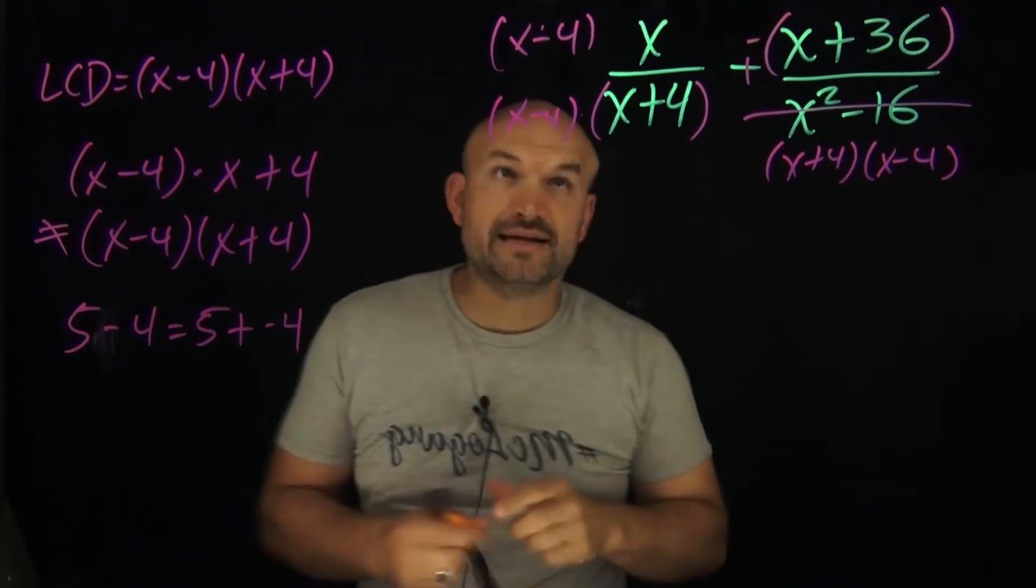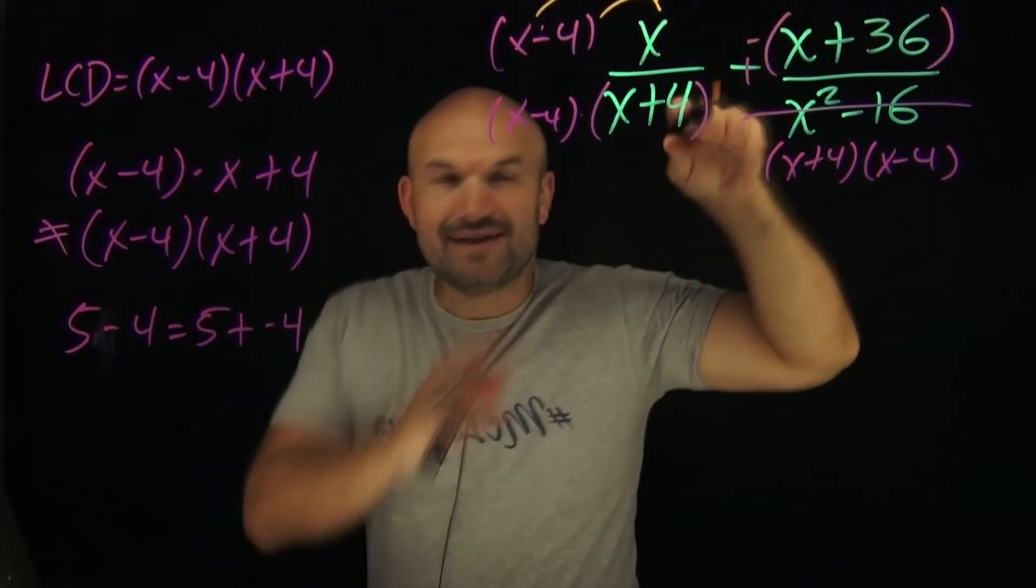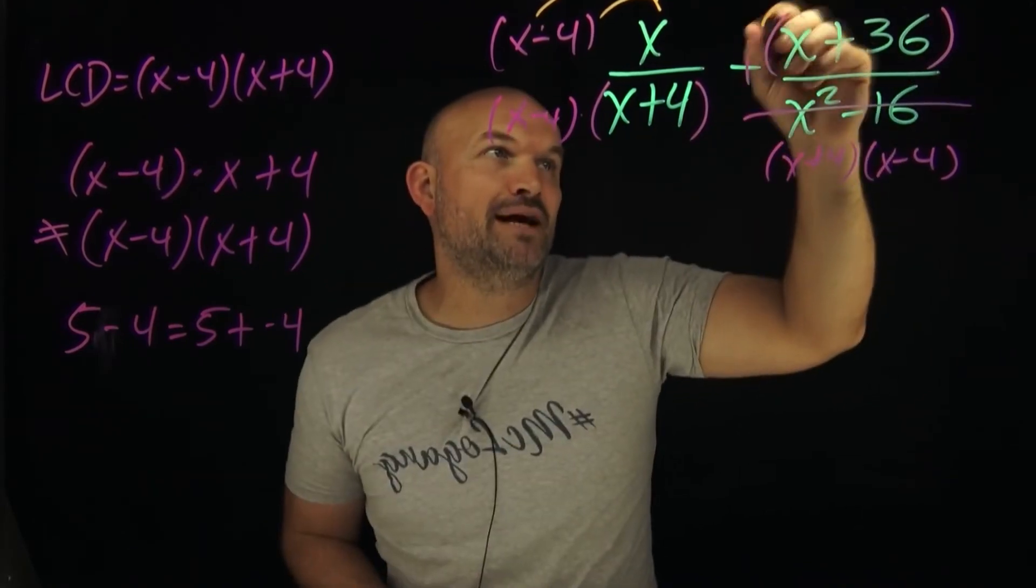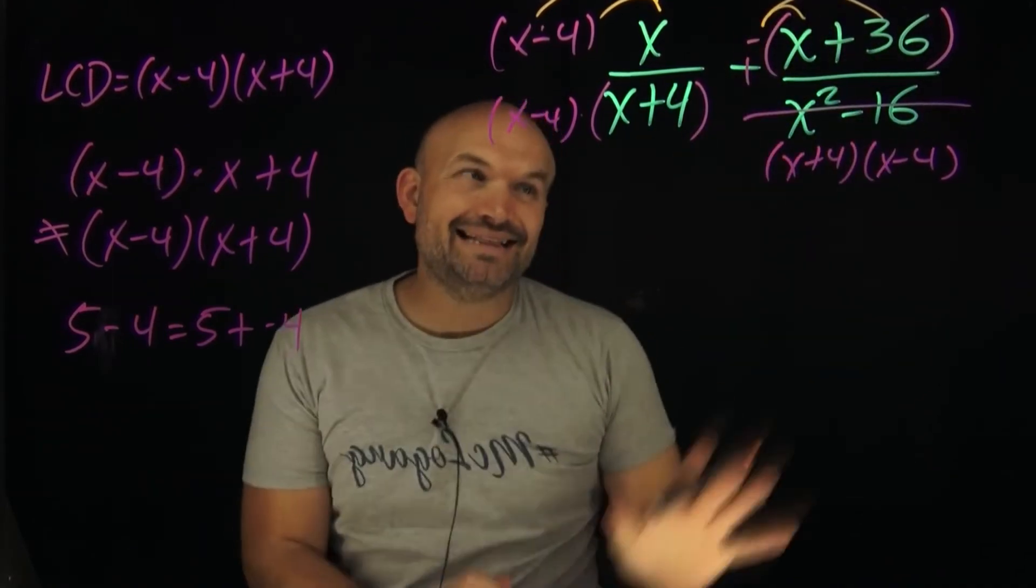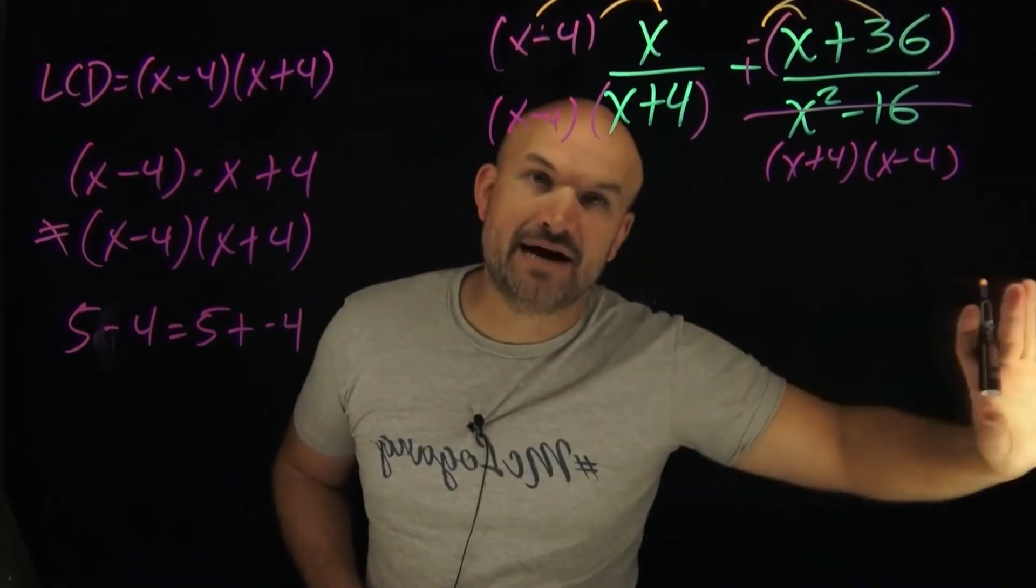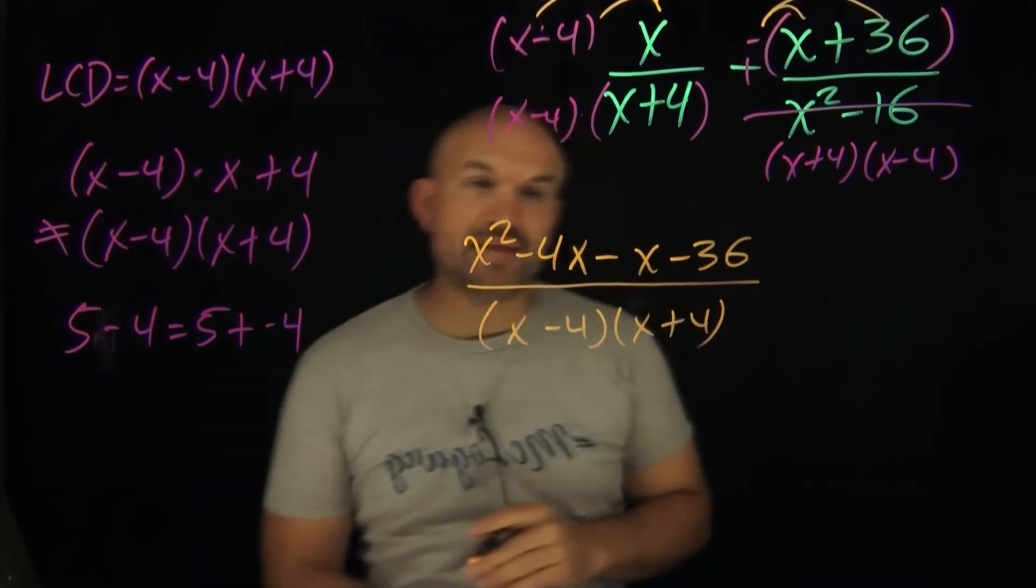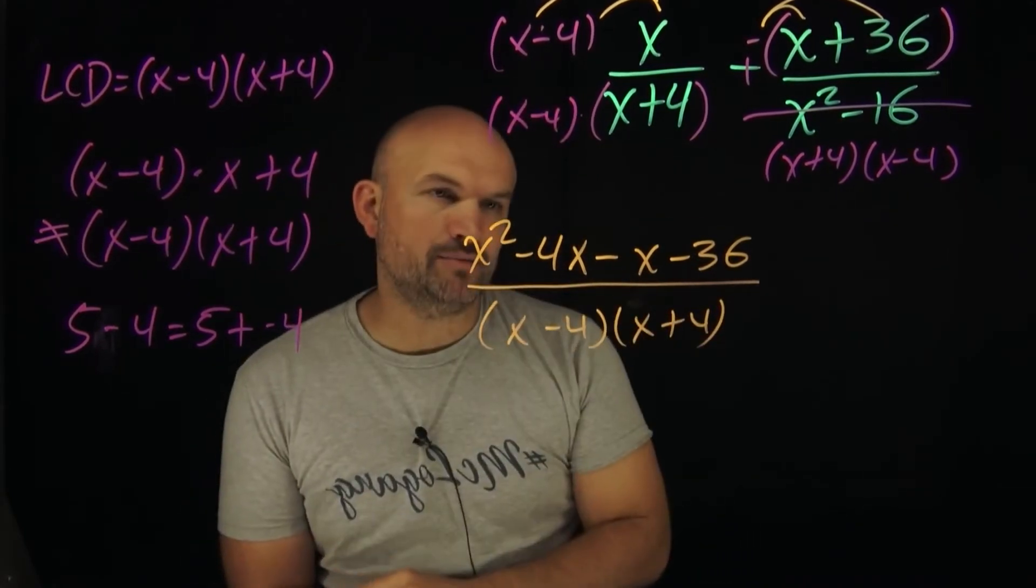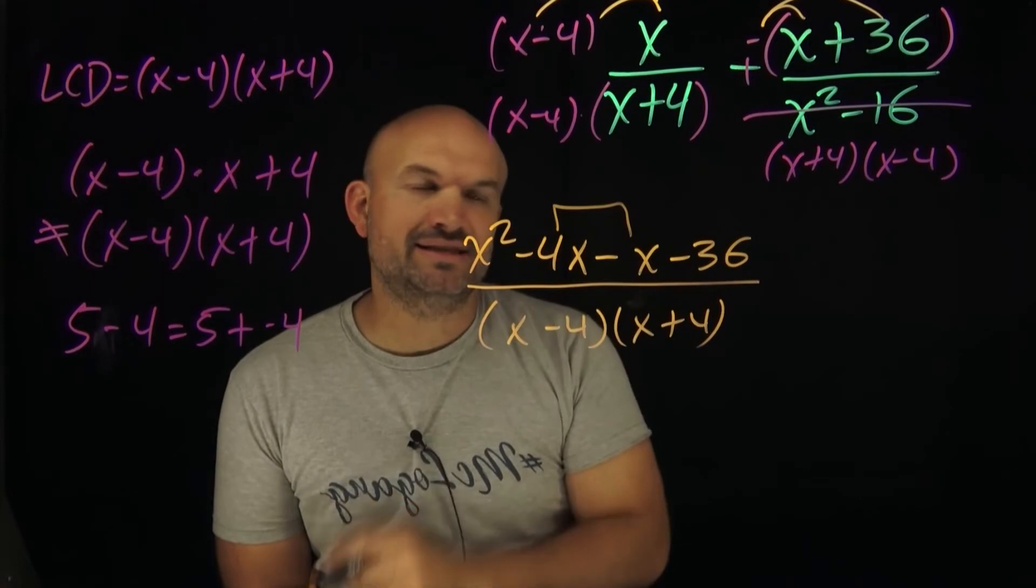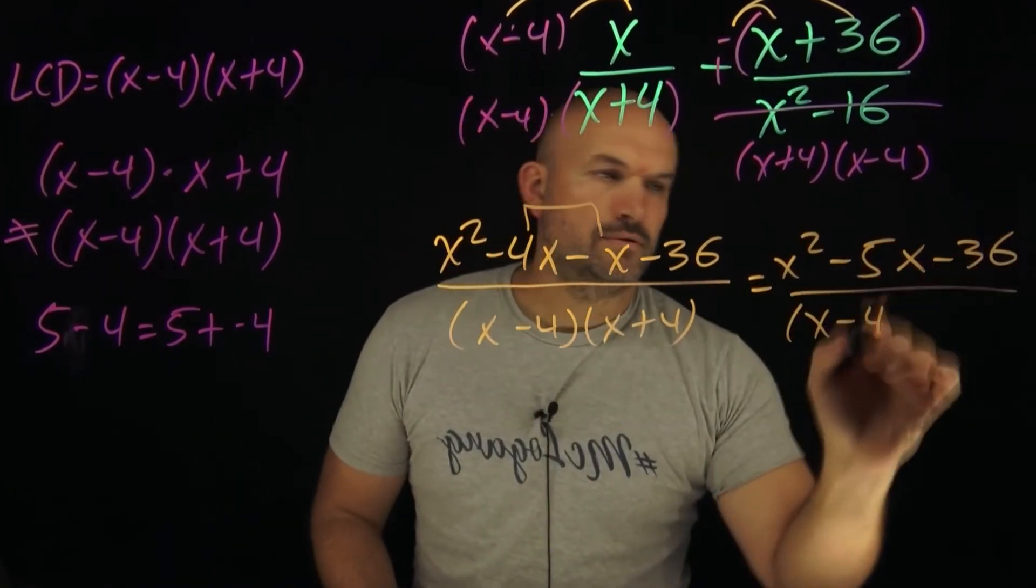All right, so now we have our common denominator. Now the one thing we do want to do is apply distributive property here. And again, notice how I have the negative with the parentheses. I can remember to apply distributive property over here. And then again, the nice thing is now that we have the least common denominator, I can just simplify everything down below. And now that I have everything, it looks like we're going to have a trinomial up top and it looks like I can combine these like terms. That's going to give me a negative 5x.